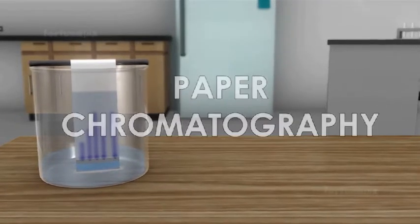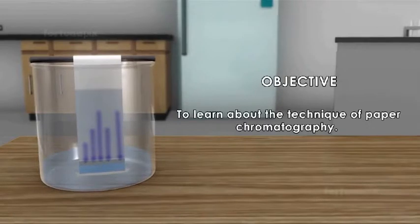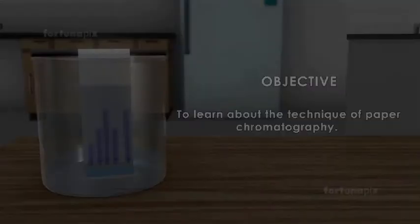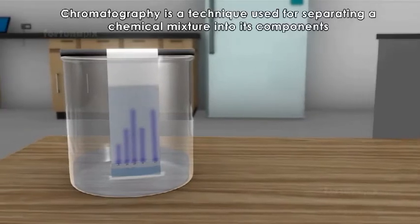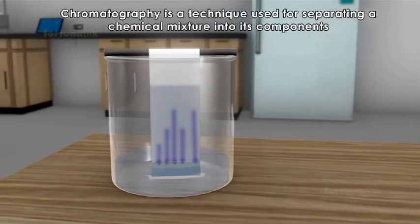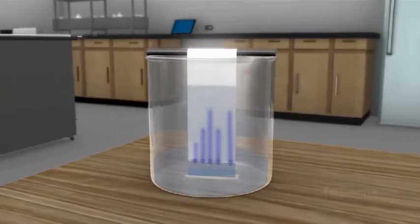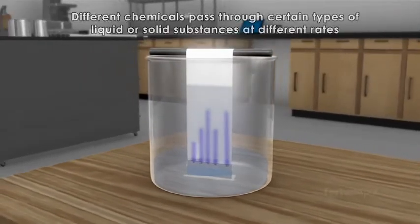Paper chromatography objective: to learn about the technique of paper chromatography. Chromatography is a technique used for separating a chemical mixture into its components. Chromatography is based on the fact that different chemicals pass through certain types of liquid or solid substances at different rates.